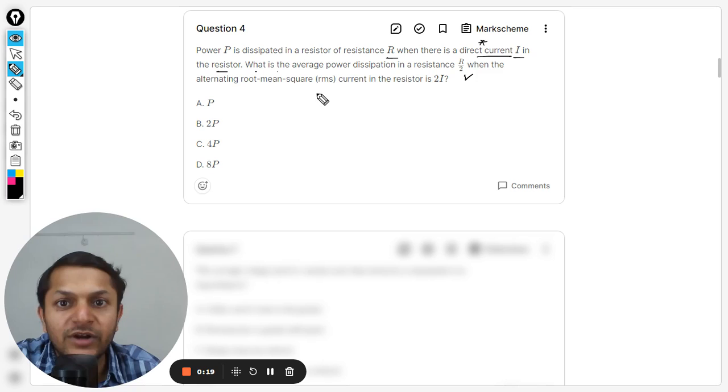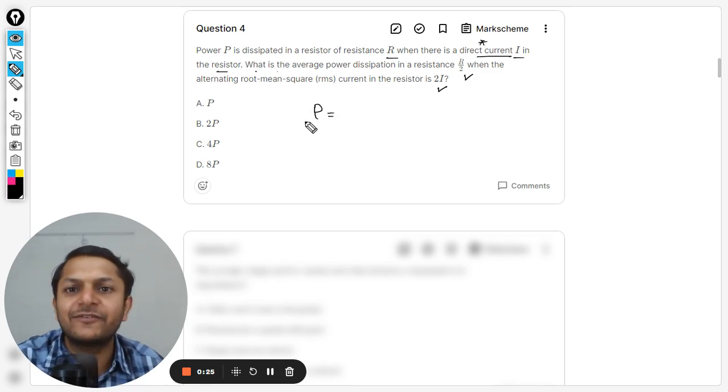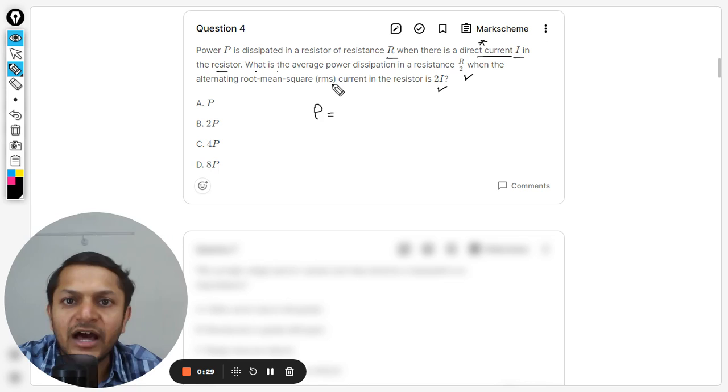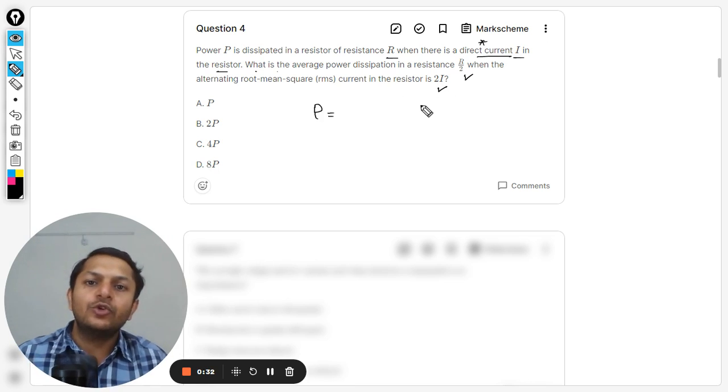Basically, he's asking about the power that will be consumed if the resistance is R by 2 and the RMS value is given by 2I.